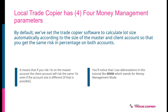In this way, in terms of percentage, you get the same risk on both accounts. So it means if you risk 1% on the master account, the client account will risk the same 1% even if the account size on the client side is different — obviously, if that's possible. No matter what lot size you open on the master account, and even if the client account is bigger or smaller, the Local Trade Copier will automatically adjust and calculate the right lot size, so that the same trade on the client side will risk the same 1% as on the master account.